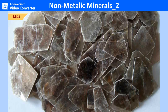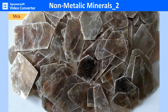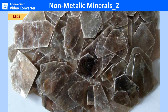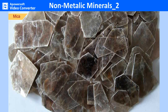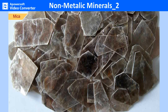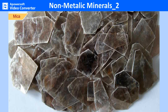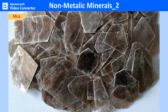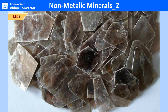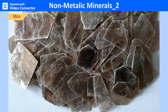Ground mica is also used as a filter or lubricant. India is the leading producer of Muscovite mica, followed by Brazil. Other producers are the US, Tanzania, Zimbabwe and Argentina. High quality mica is found in Jharkhand, Bihar, Andhra Pradesh and Rajasthan.